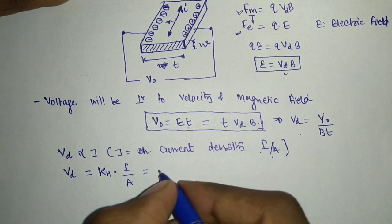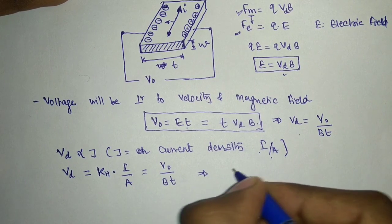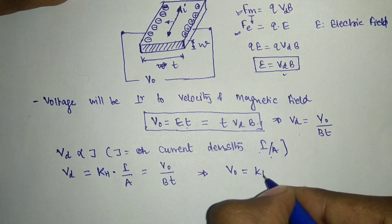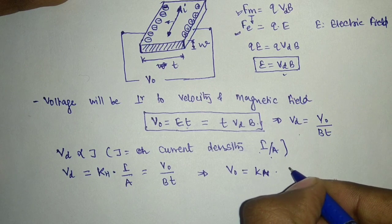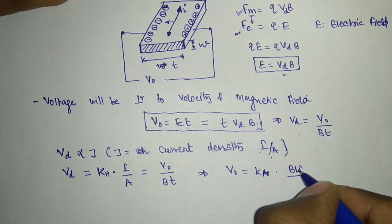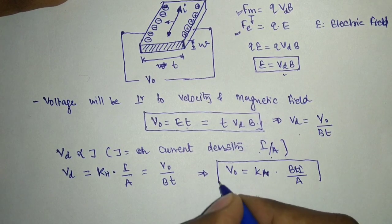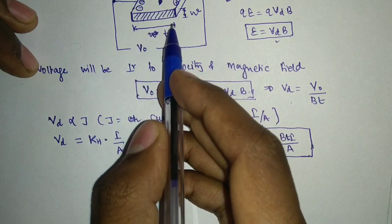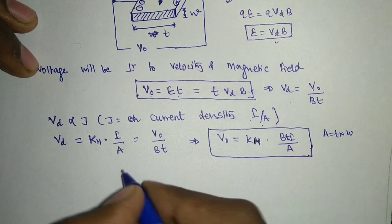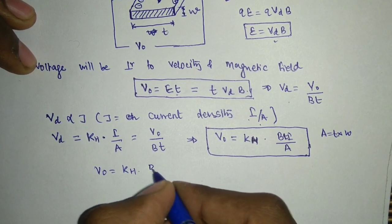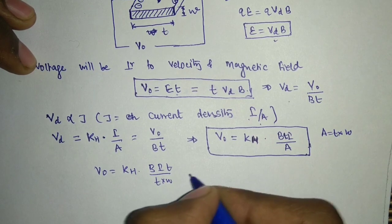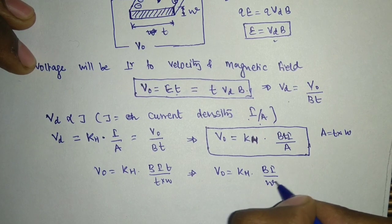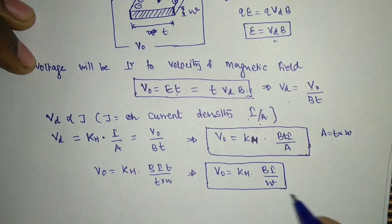Finally I can say that my V0, the potential difference generated across the conductor, will be equal to Kh·B·I·T/A. Now I can replace this area because I already know the dimensions — one is T, another is W — so area = T·W. Replacing it: V0 = Kh·B·I·T/(T·W). T cancels out, and we get V0 = Kh·B·I/W. That is the final result of our Hall effect analysis.